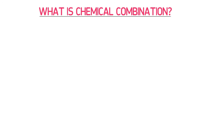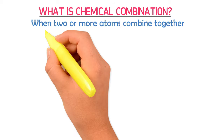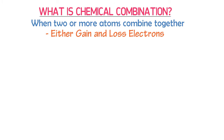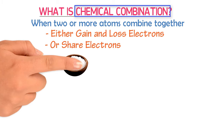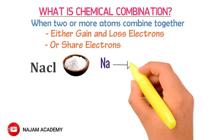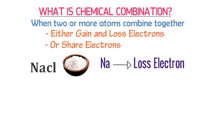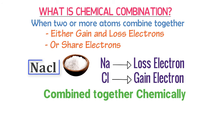Remember, if you do not learn the two key concepts — chemically combined together and fixed ratio by mass — you will not understand compounds thoroughly. So, what is chemical combination? When two or more atoms combine together due to either gaining, losing, or sharing electrons, we say that chemical combination occurs. For example, in table salt, sodium loses one electron and chlorine gains one electron — as a result, they are chemically combined together.